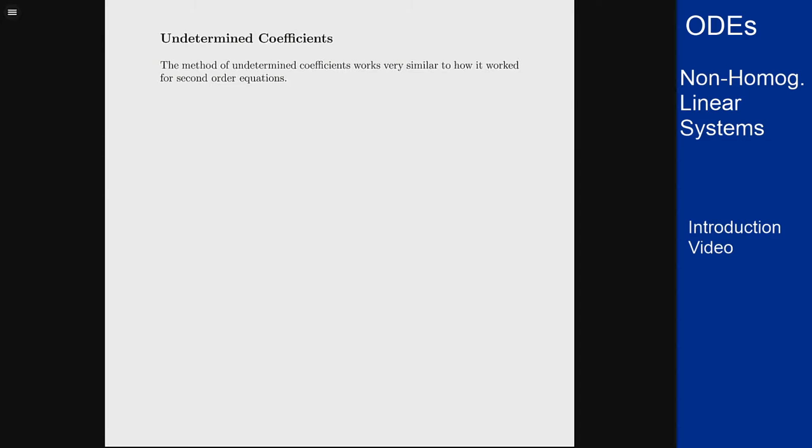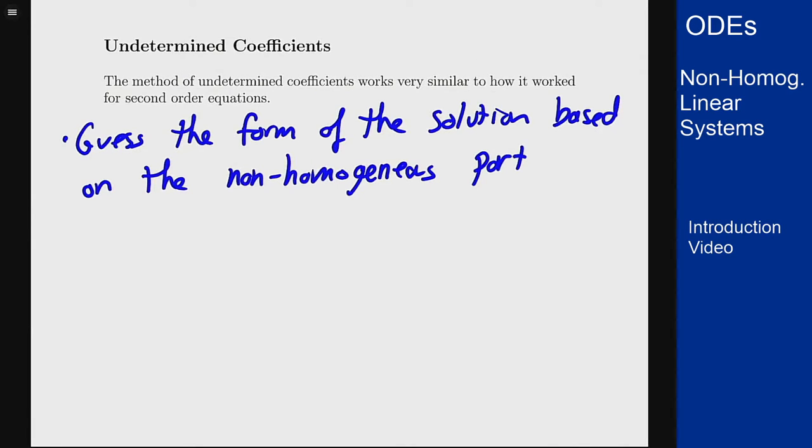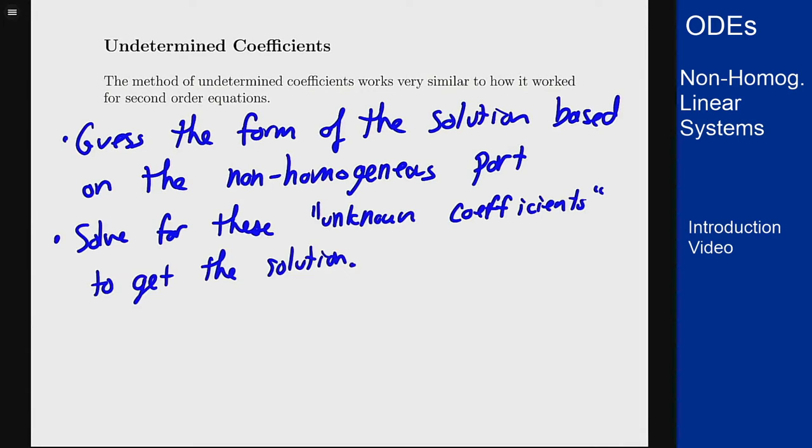based on the non-homogeneous part and we'll have unknown coefficients that we will solve for to get the solution to the non-homogeneous problem. The main difference here is that all of these coefficients will now be vectors so there's more unknowns to solve for but the process is the same.